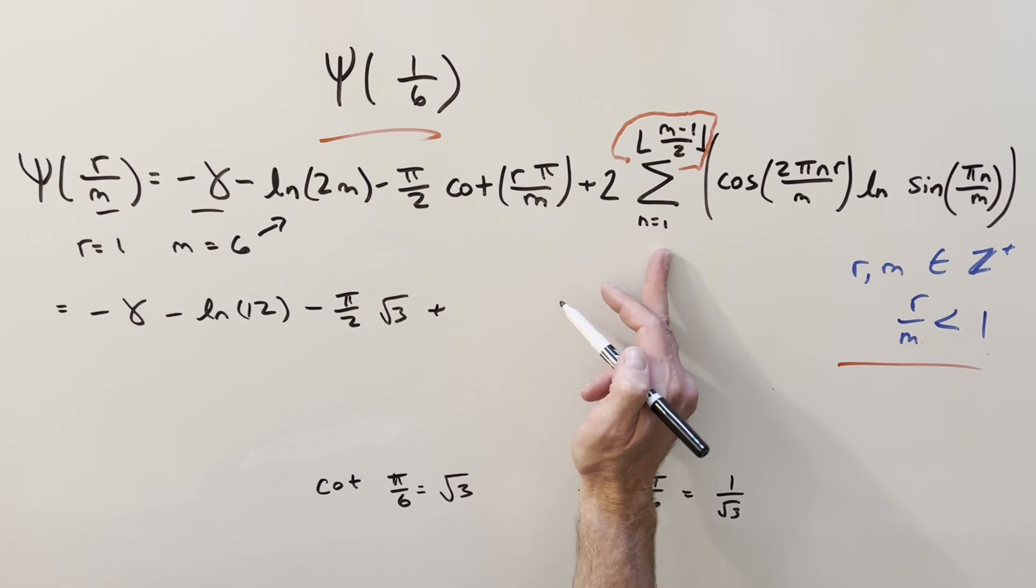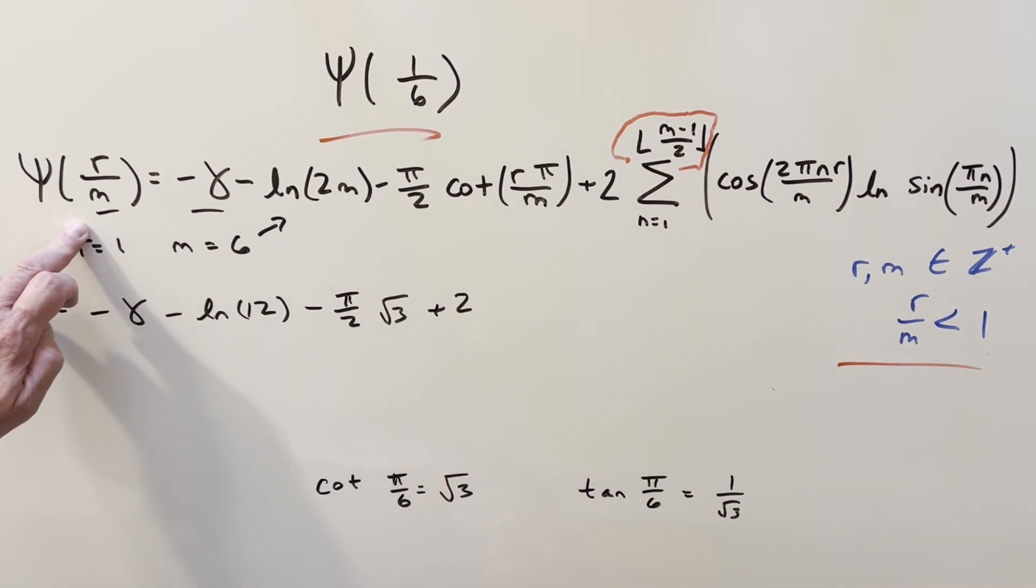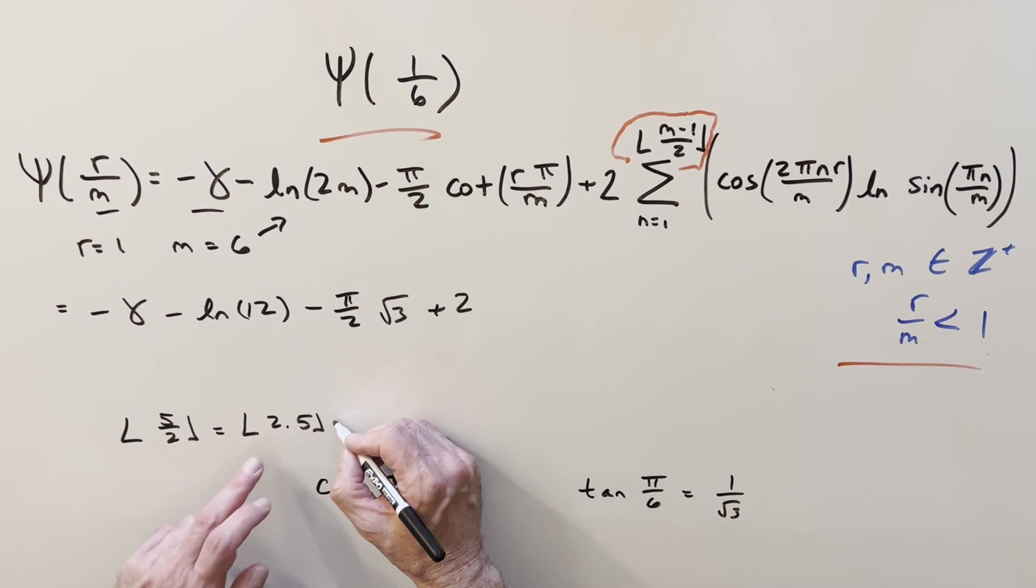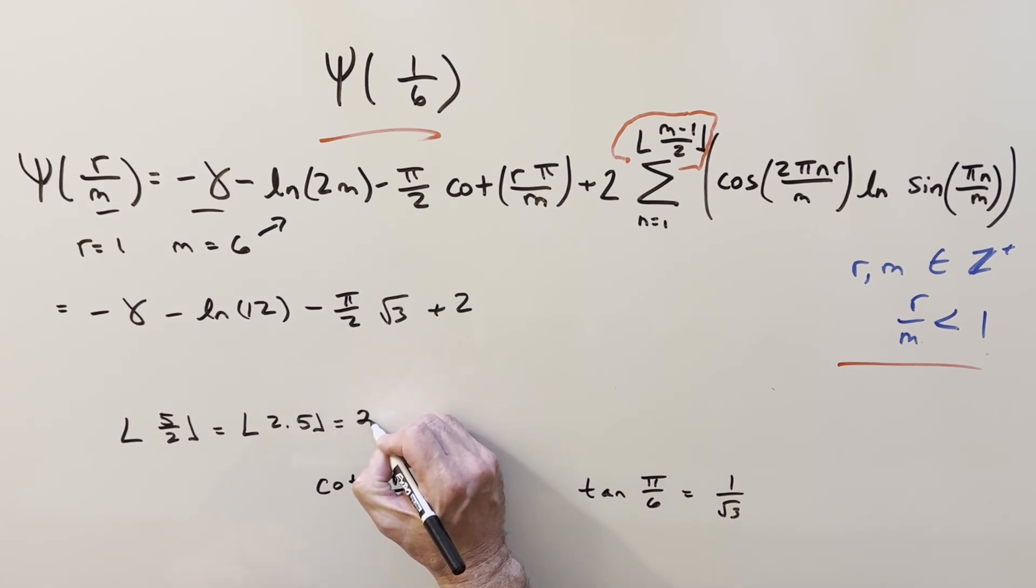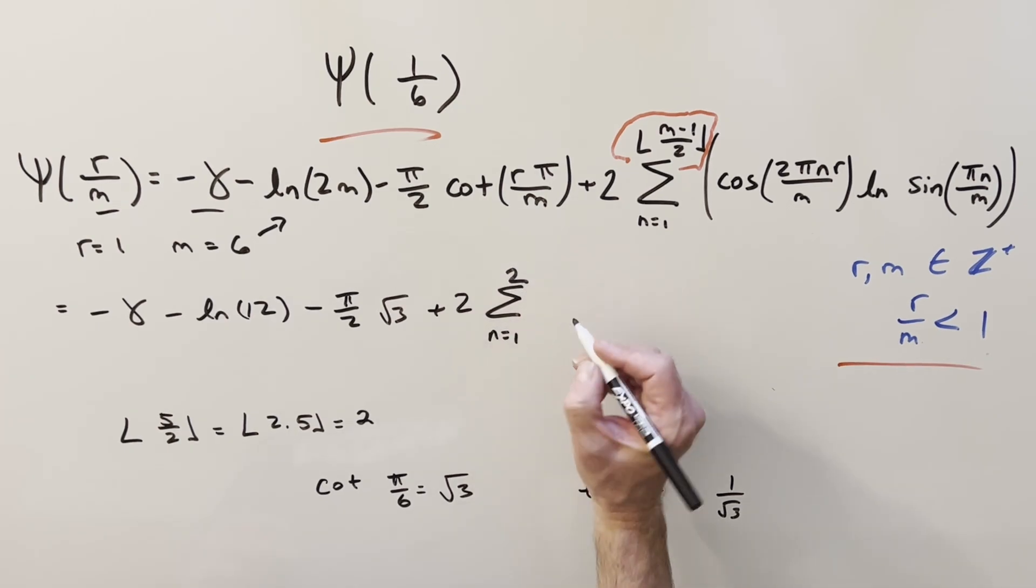And then here, this is where we can deal with this floor function. So m is 6. m minus 1 is going to be 5. So what we have here is just the floor function of 5 over 2. You can think of this as something like 5 over 2 is exactly 2.5. The floor function is going to round us down to the next highest integer. So this value is just going to be 2. So coming to our series, this is just going to be n equals 1 to our upper bound reduced to 2.